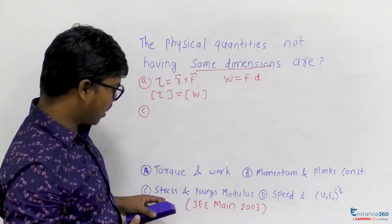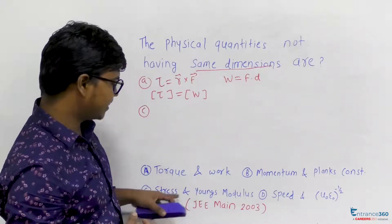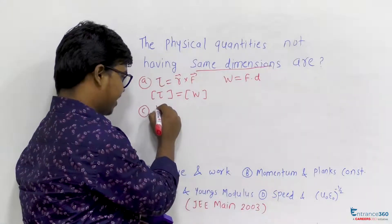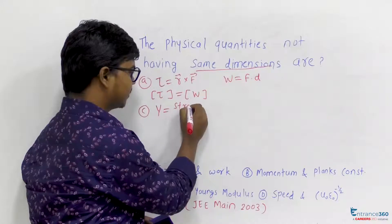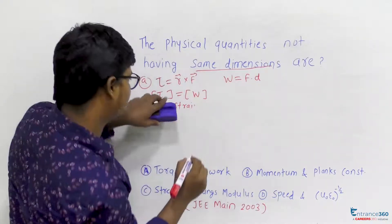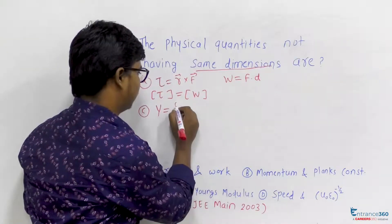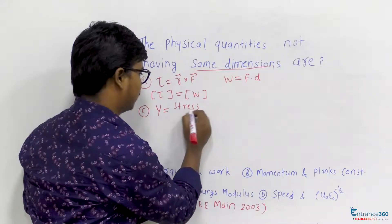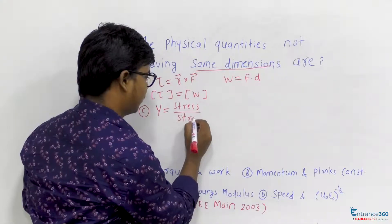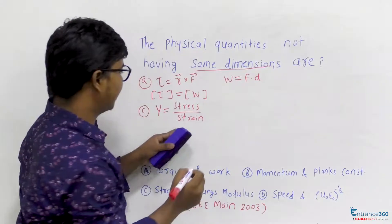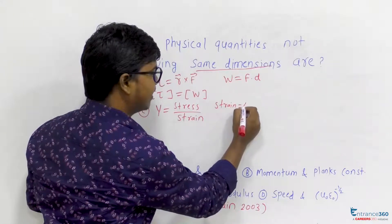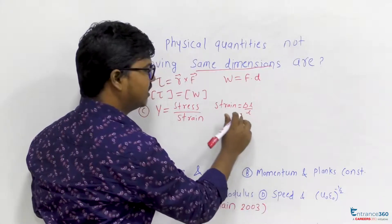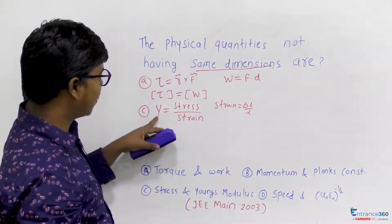We should remember the formula which relates stress and Young's modulus, which says Young's modulus will be given as stress upon strain. So what is strain here? Strain will be simply delta L upon L, which is unitless.